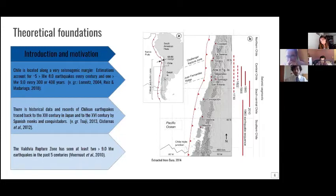The Valdivia rupture zone has seen at least two gigantic with more than nine moment magnitude earthquakes in the past five centuries. This is the 1575 earthquake and the 1960 earthquakes.